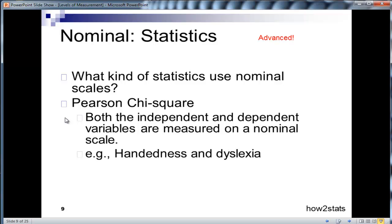And here would be an example. Handedness and dyslexia. Suppose somebody wanted to look at the association between these two variables. Well, handedness is measured on a nominal scale, left or right. These are categories. There is no quantitative difference between them. And dyslexia, yes or no, which is also a category. Some people are diagnosed with dyslexia, and some people are not. Some people are left-handed, and some people are not. We would perform a Pearson Chi-Square analysis on these data, both of which are measured on a nominal scale.